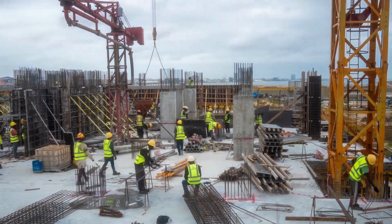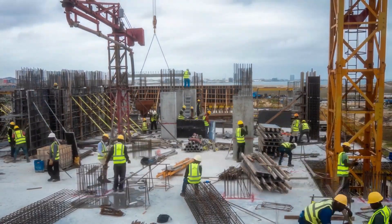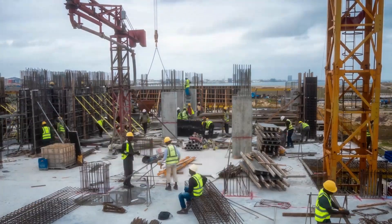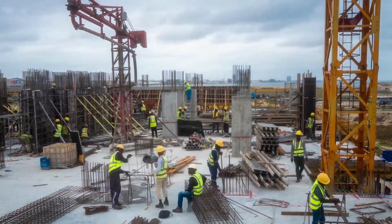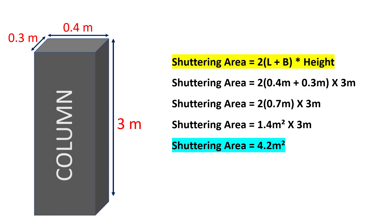Now, let's apply all these things to a practical example. Suppose we have a rectangular column with a height of 3 meters, a width of 0.3 meters, and a length of 0.4 meters. To find the shuttering area of this rectangular column, we use the formula: shuttering area = 2(l + b) × height.